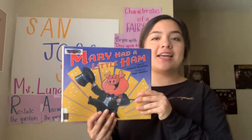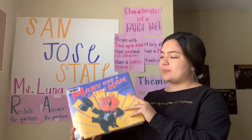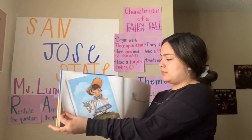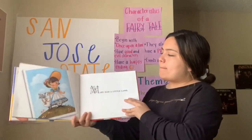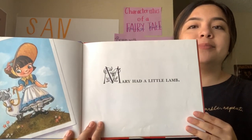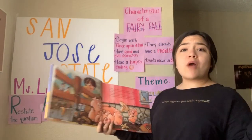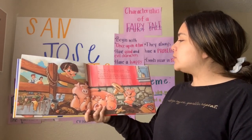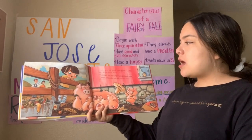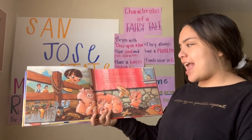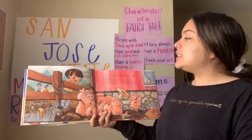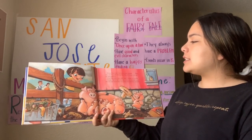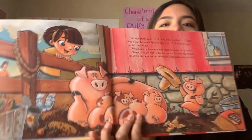Let's start reading. Mary had a little lamb — wrong! Hold on to your woolies. There was a boo-boo. What Mary had was a little ham. A corker of a porker. Stanley was the last in the litter of the Snotowski brood. He was quite handsome, very pink, and extremely talented.